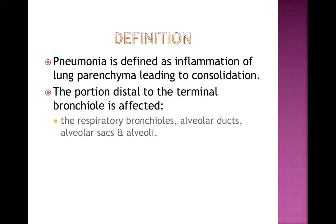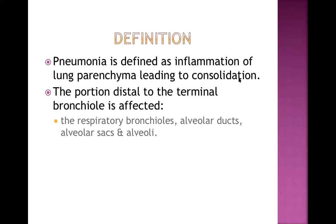Pneumonia is defined as inflammation of lung parenchyma leading to consolidation, also known as pneumonitis. The part of the lung distal to the terminal bronchiole is affected — this is known as the acinus of the lung. The affected parts are the respiratory bronchiole, alveolar duct, alveolar sac, and alveoli. Pneumonia is an infectious illness; there is inflammation of the parenchymatous part of the lung which leads to consolidation, meaning solidification of that part.